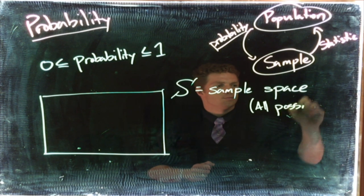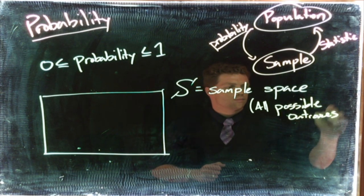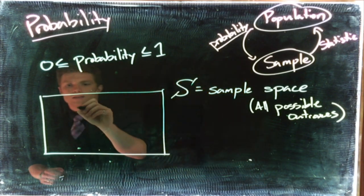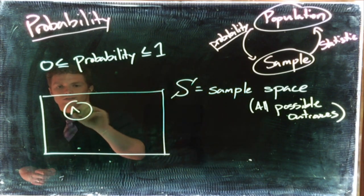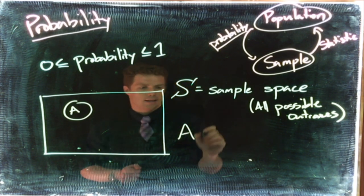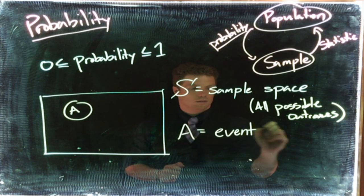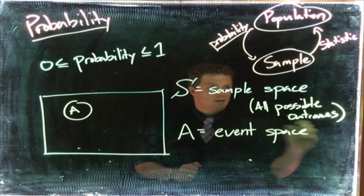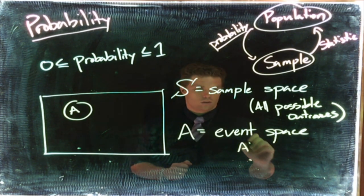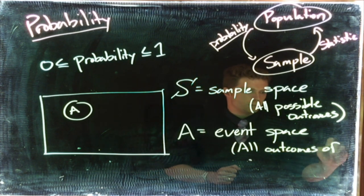And then within there we're interested in events, usually done by another capital letter. We'll use A for right now. This is going to be our event space, and these are going to be all outcomes of interest.